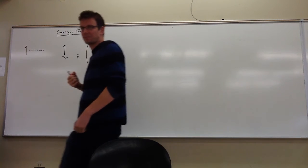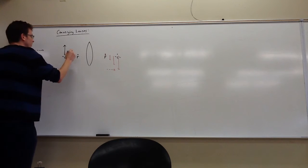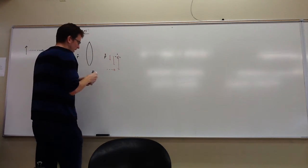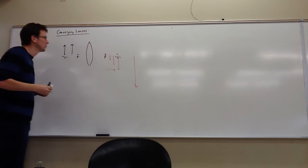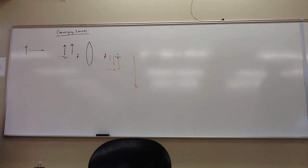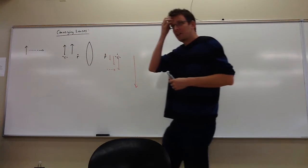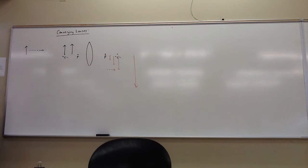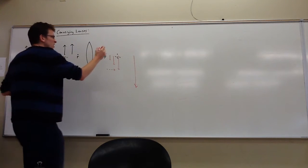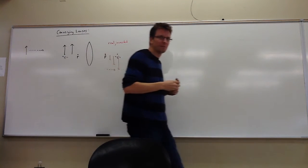From here on forward, the object is going to be closer and the image is going to be farther and also larger. As the object gets really close to the lens, the lens has a really hard time channeling that into an image, so the image starts to fall pretty far away and it's also bigger. These are all real images—they're all real and inverted—and those always go together for a single mirror or lens.